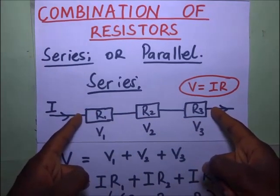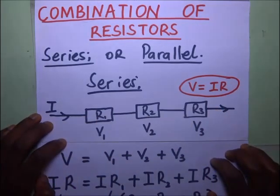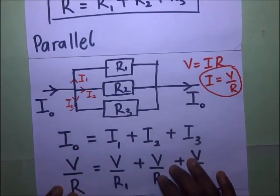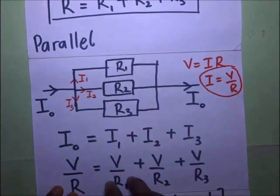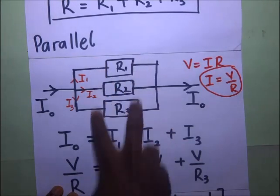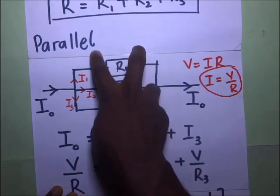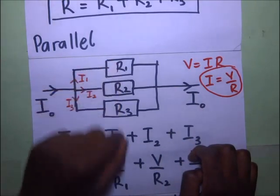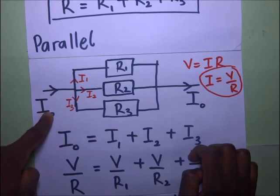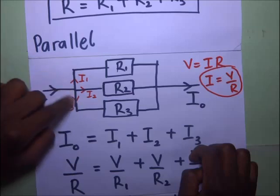If we have resistors that are in parallel, the potential difference is the same across all resistors, whether the resistors are identical or they have different resistances. The PD across here is the same, but the current going through here is not the same. The current coming in here is split into three. If these resistors are identical, it will mean it's the same current that is split throughout these three.